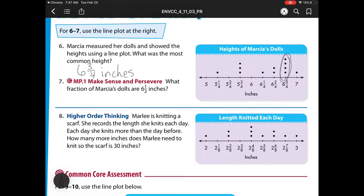What fraction of Marcia's dolls are 6 1/2? Well, remember, our fractions are made up of parts over wholes, so I need to figure out my wholes, or how many total dots we have. So we have 1, 2, 3, 4, 5, 6, 7, 8, 9, 10, 11, 12. So we have 12 total dolls.